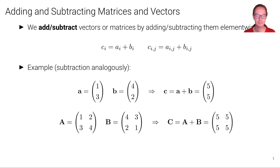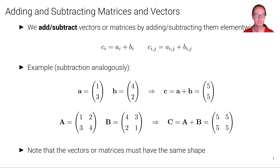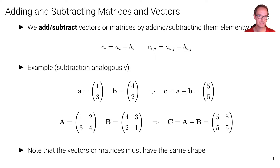Similarly for matrices we take each of the elements individually and add them together. In this particular case we get 5, 5, 5, and 5, because 1 and 4 is 5, 2 and 3 is 5, and so forth. Note that the vectors or matrices must have the same shape for this to be possible — you cannot add a 2 by 3 matrix to a 3 by 2 matrix, for example.